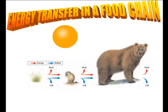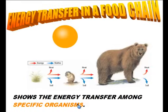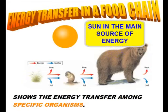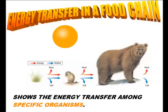The first representation we're going to look at is called a food chain. A food chain shows the energy transfers among specific organisms in an ecosystem. You need to remember that the sun is the primary source of energy in all ecosystems — in a land ecosystem or an aquatic ecosystem. Without the sun, producers couldn't make food, and if producers couldn't make food, everything else would collapse.